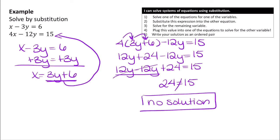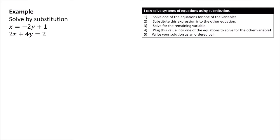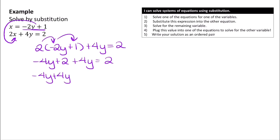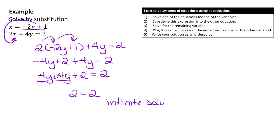Anytime you get a statement that doesn't make sense, that means the system has no solution. Now let's solve this next system by substitution. This one is already solved for x, so plug negative 2y plus 1 into the second equation: 2 times (negative 2y plus 1) plus 4y equals 2. Distributing gives negative 4y plus 2 plus 4y equals 2. Combining like terms, negative 4y and positive 4y cancel, leaving 2 equals 2 — which is always true. That means the system has infinitely many solutions.